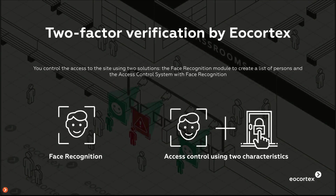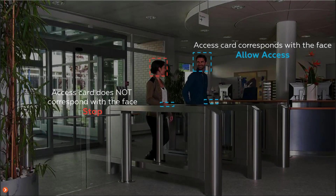The simpler approach: install cameras at the entrance and import face recognition into EO Cortex software — that's it. You don't even need to re-photograph employees. A person approaching the entrance with a card will be recognized, and the system will determine whether to allow entry. If the face doesn't match the card, the person won't get through. A common example is a gym where people give cards to friends — if the face doesn't match, access is denied.